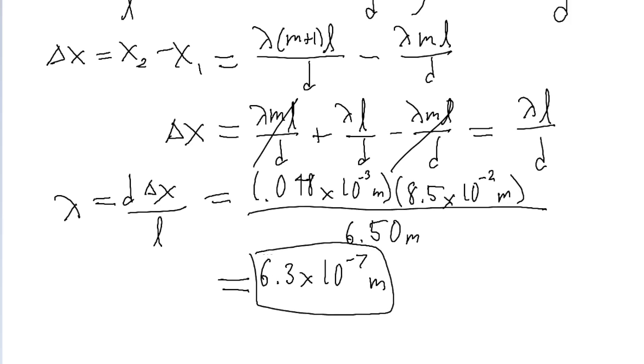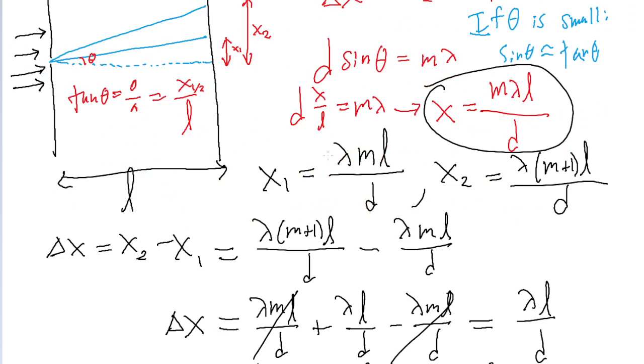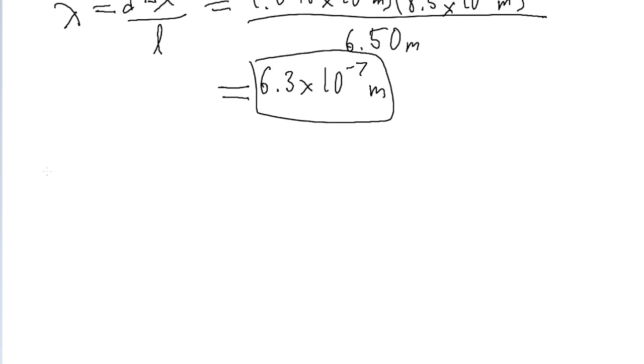And so that is the wavelength of our light, but the problem doesn't stop there. We're also asked to find the frequency. Fortunately, finding the frequency is pretty easy once we know the wavelength.